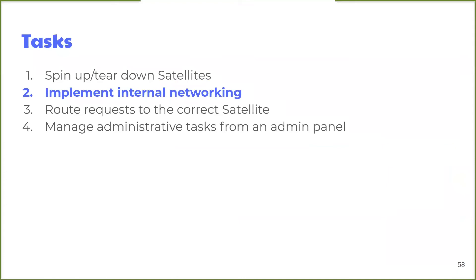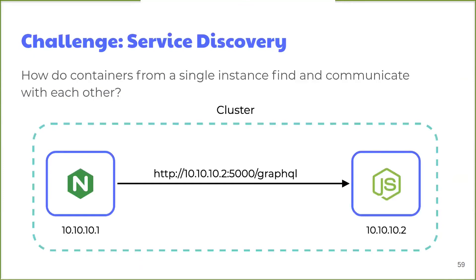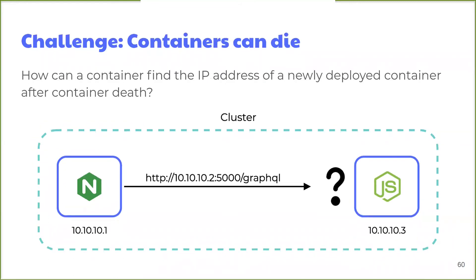The next challenge is implementing internal networking. Containers from a single Satellite instance will potentially be spread across multiple nodes, so they need a way to find each other and communicate. For instance, how can our NGINX container forward requests to the Express API? In Kubernetes, each container is given an IP address and is reachable by that IP address. However, hard-coding the IP address becomes a problem because containers can fail or be updated, and when a container fails or is updated, it is respawned as a new container with a brand new IP address.